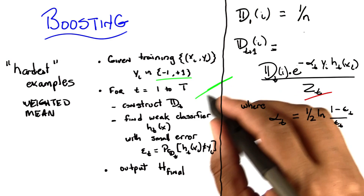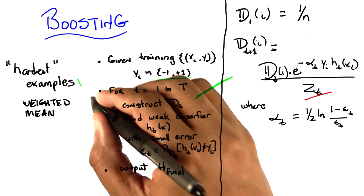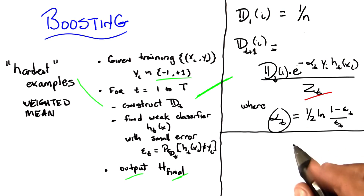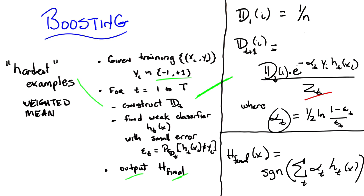So that ties together what constructing D does for you and connecting it to the hardest examples. That gets us to a nice little trick where we can talk about how we actually output our final example. The way you construct your final example, the way you do that combination in the step, is basically by doing a weighted average. The weight is going to be based upon alpha sub t. So the final hypothesis is just the SGN function of the weighted sum of all of the rules of thumb, all of the weak classifiers that you've been picking up over all of these time steps, where they're weighted by the alpha sub t's.